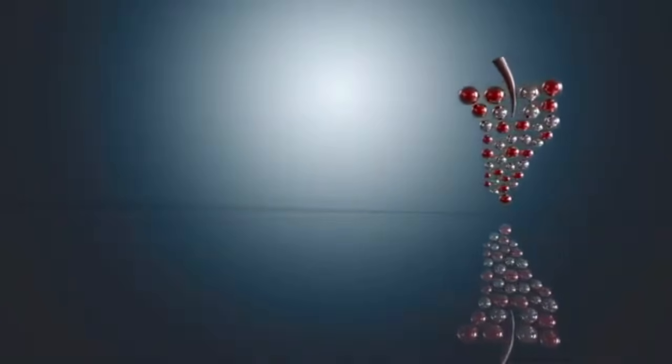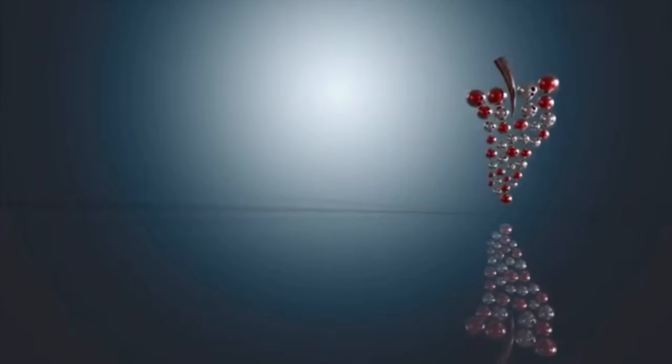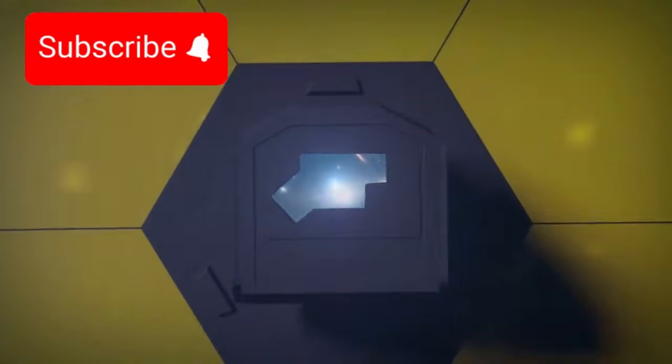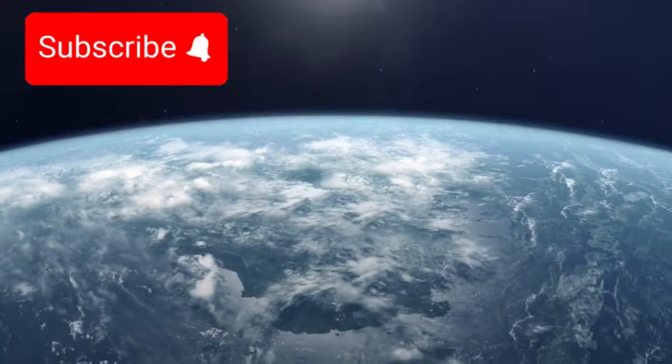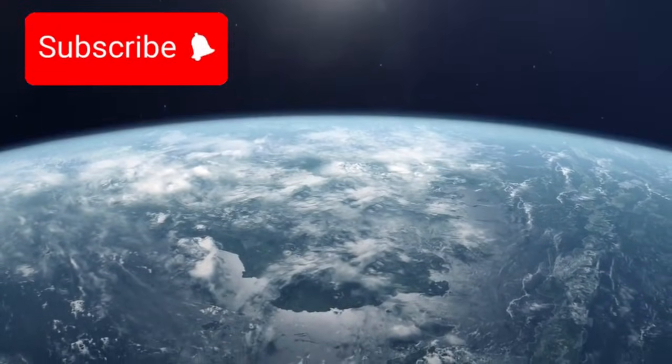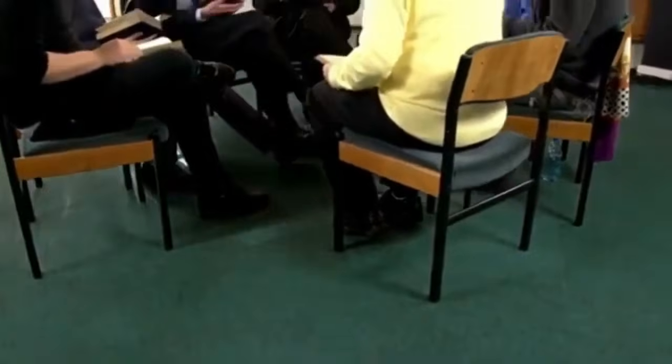This blue, ghostly layer is actually controlling Pluto's entire climate and weather system in ways that scientists never imagined possible. To understand how incredible this discovery is, you need to know that most planets in our solar system get their energy and heat from the sun. That makes perfect sense, right?